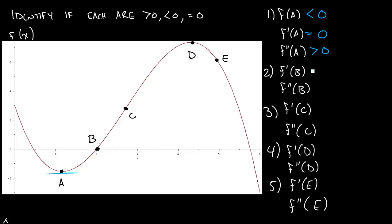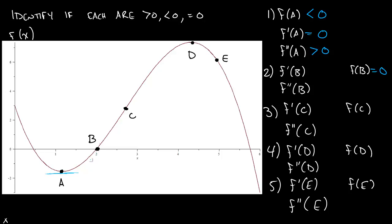At b, we have a similar set of things to go through. The output value here is actually 0, so f of b is equal to 0. And if I want to look at f prime of b, I want to think about that tangent line. The tangent line, no matter how bad I draw it, is going to be positive — this is an increasing line, so f prime of b is greater than 0. And f double prime: we need to ask about the concavity, and it looks like this part of the graph is still concave up, so this would be greater than 0.